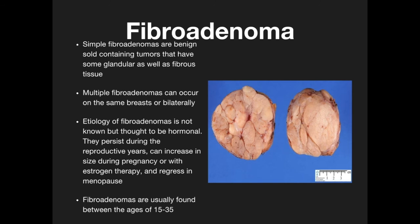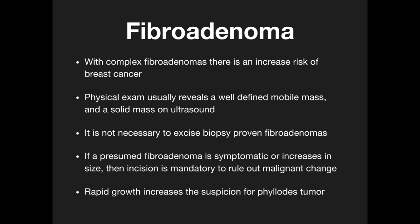Simple fibroadenomas are solid-containing tumors with both glandular and fibrous tissue. Multiple fibroadenomas can occur in the same breast or bilaterally. The etiology is not known but thought to be hormonal. They persist during the reproductive years, can increase in size during pregnancy or estrogen therapy, and may regress at menopause. They are usually found between ages 15 and 35. With complex fibroadenomas, there is an increased risk of breast cancer. A physical exam reveals a well-defined mobile mass and a solid mass on ultrasound. It is not necessarily required to excise proven fibroadenomas, but if a presumed fibroadenoma is symptomatic or increases in size, excision is mandatory to rule out malignant change.